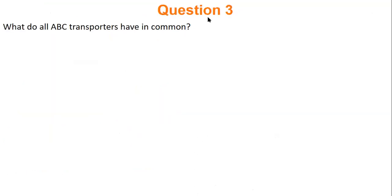Quick recap: what do all ABC transporters have in common? They all have an ATP binding cassette — that's why they get the name ABC. Anytime you see ABC transporter inside the cell, think ATP binding cassette.